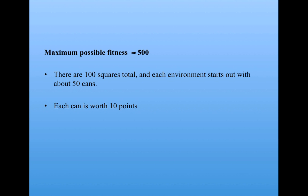I wanted to point out that the maximum possible fitness of a strategy is about 500. That's because there's 100 squares total in Robbie's world. And each time Robbie starts out in an environment, there's about 50 cans. That is, about half the sites have cans on them. Sometimes it's less than 50, sometimes it's more than 50 because of the randomness, but on average it's 50. And each can is worth 10 points. And so therefore the maximum number of points that Robbie can get in an environment is about 500.